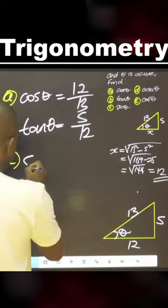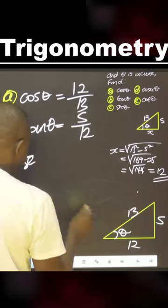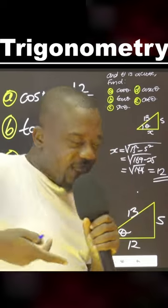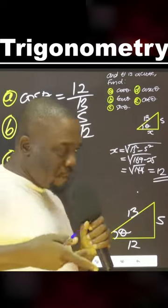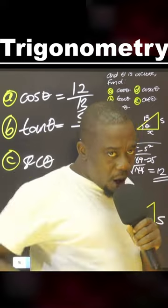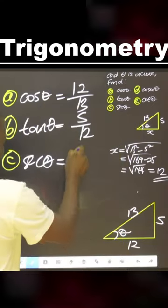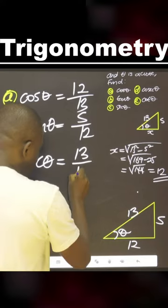Then sec theta. Remember, sec is reciprocal of cosine. So we know cosine to be adjacent over hypotenuse, so the opposite is hypotenuse over adjacent. That is hypotenuse over adjacent, 12.